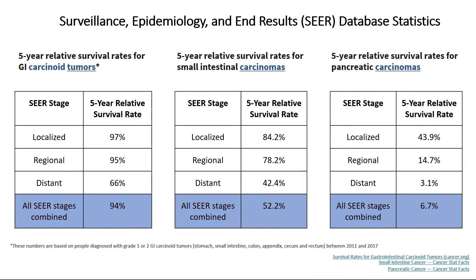Pancreatic cancer is notorious for being very aggressive, with a five-year survival rate of about seven percent. Compared to that, small intestinal carcinomas have a five-year survival rate of about 50 percent. And the good news is that neuroendocrine tumors, especially GI neuroendocrine tumors, have a five-year survival rate of about 95 percent. These are still important, and you need a specialized care team like at University of Chicago because it almost ends up being like a chronic disease.